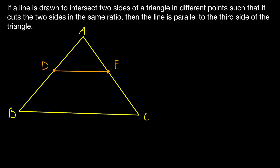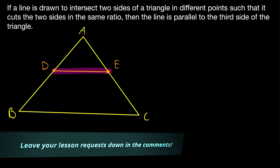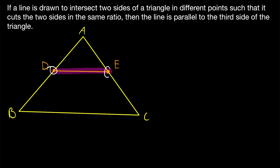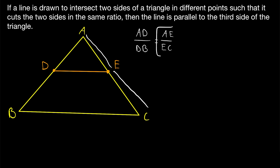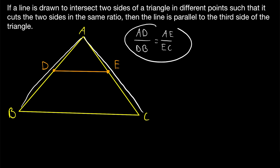In a recent lesson, we proved the basic proportionality theorem for triangles, which states that if a line is drawn to intersect two sides of a triangle in two different points, and the line is parallel to the third side of the triangle, then that drawn line must cut the other two sides of the triangle in the same ratio. So in this diagram, that means the ratio of AD to DB is equal to the ratio of AE to EC.